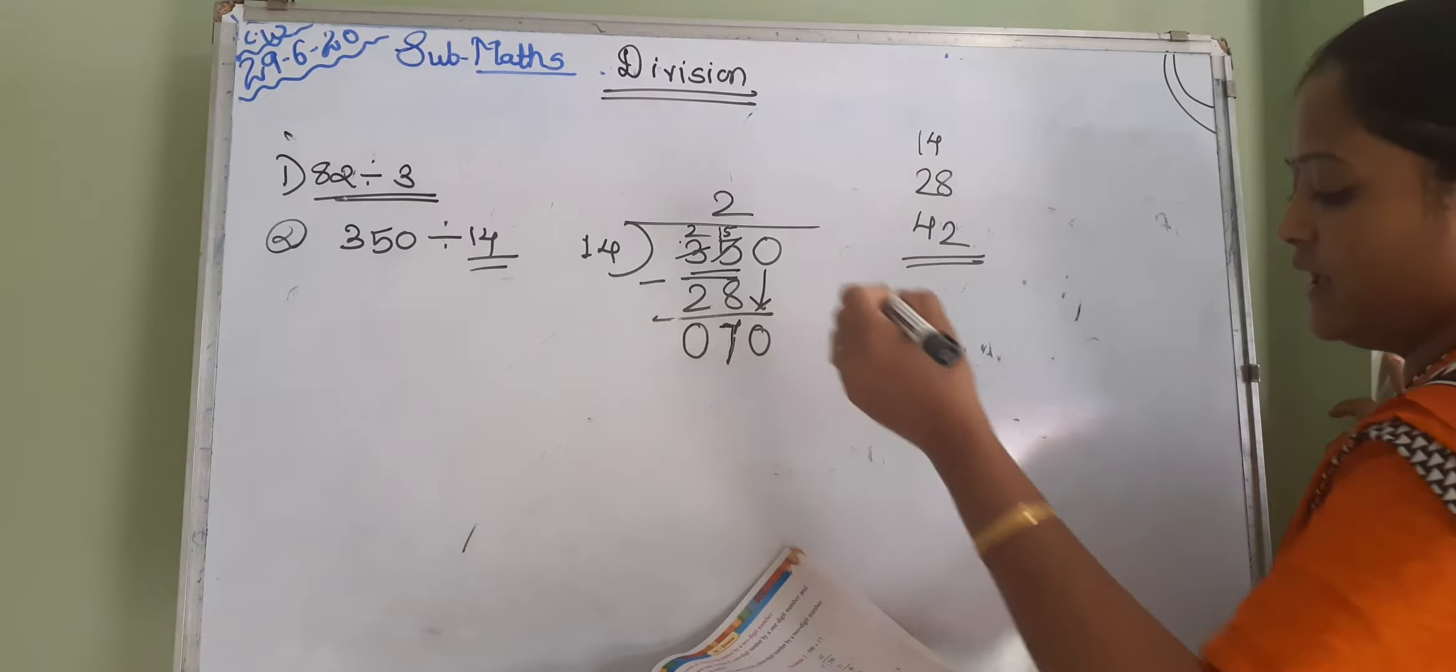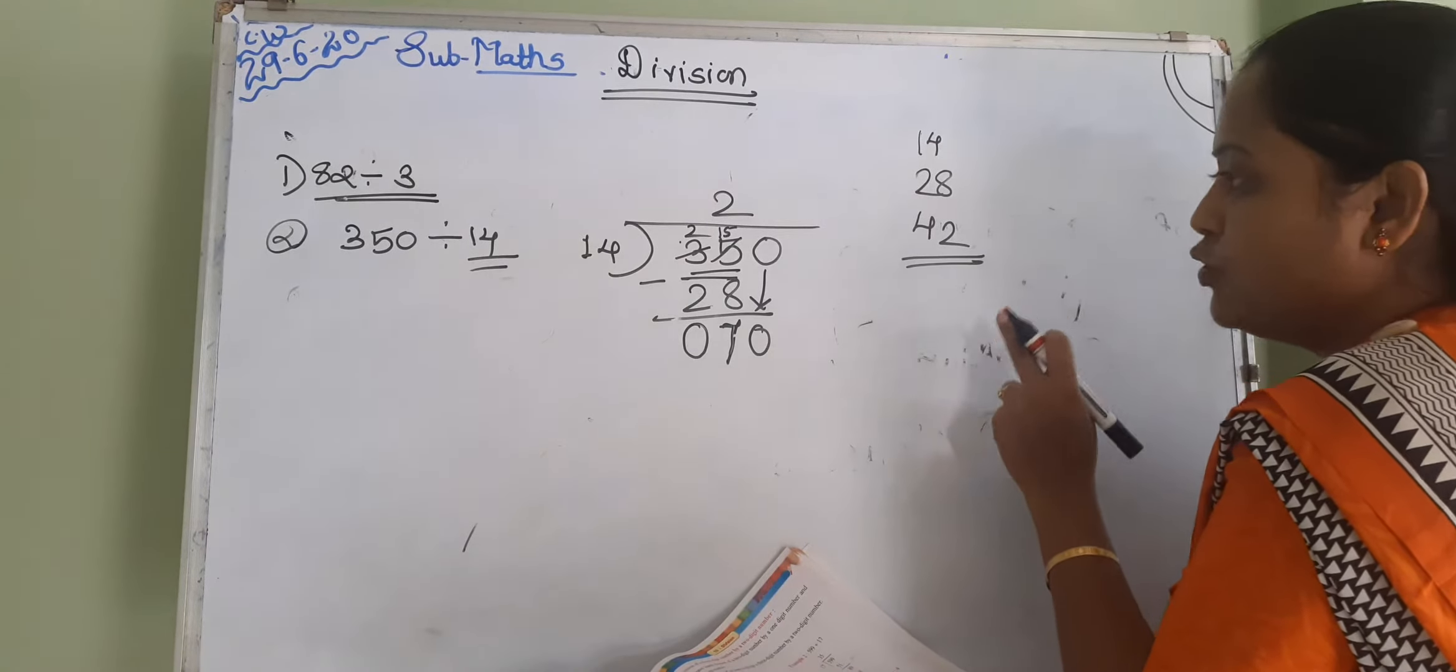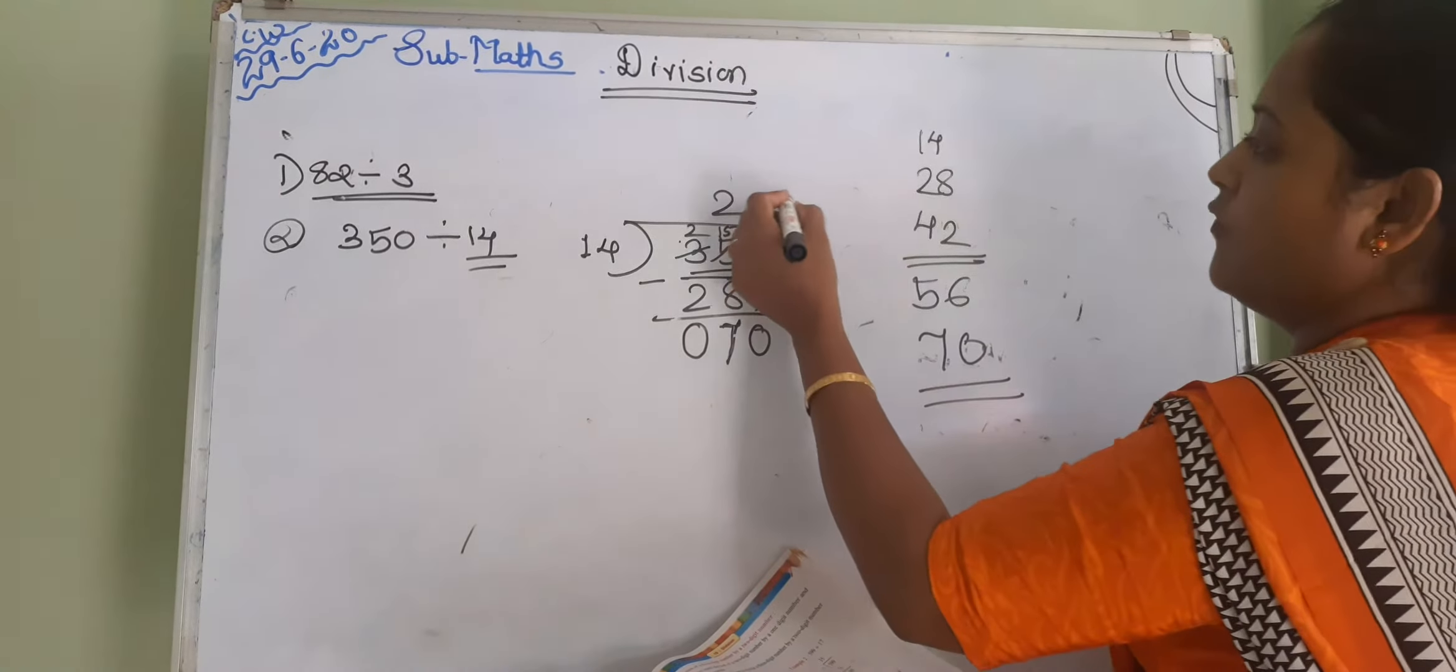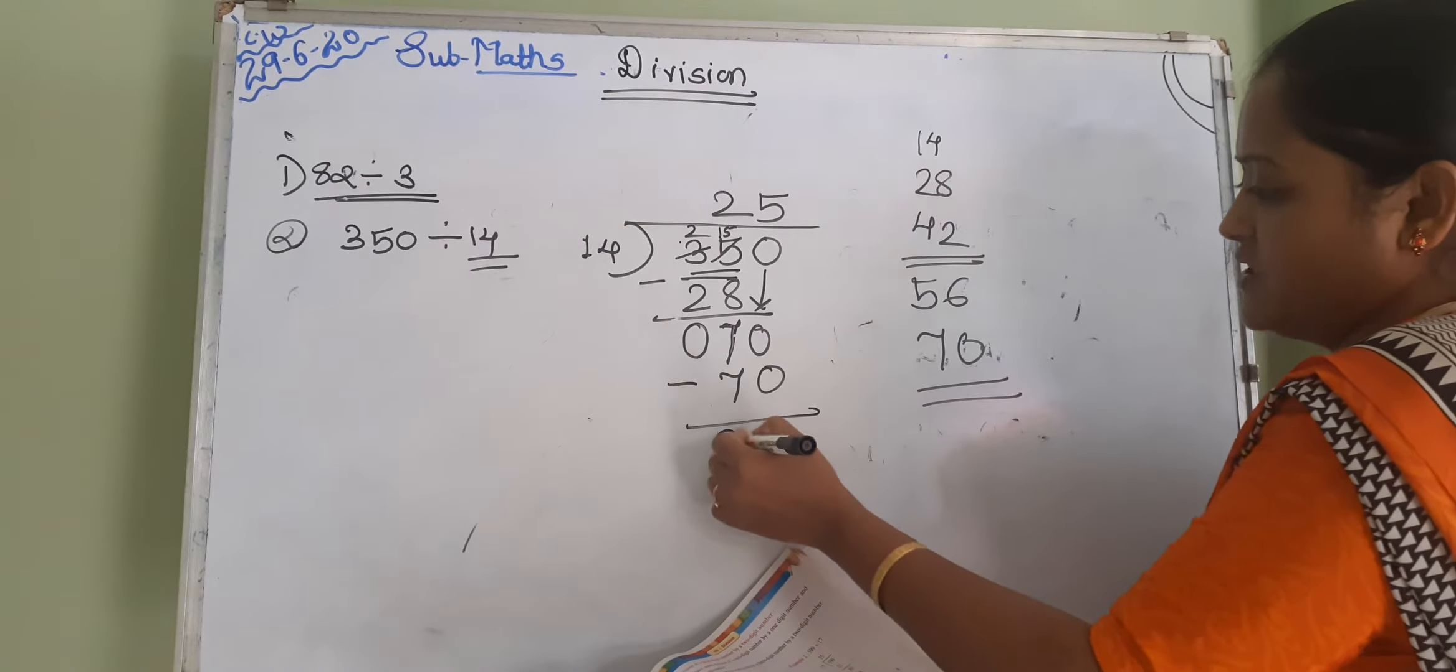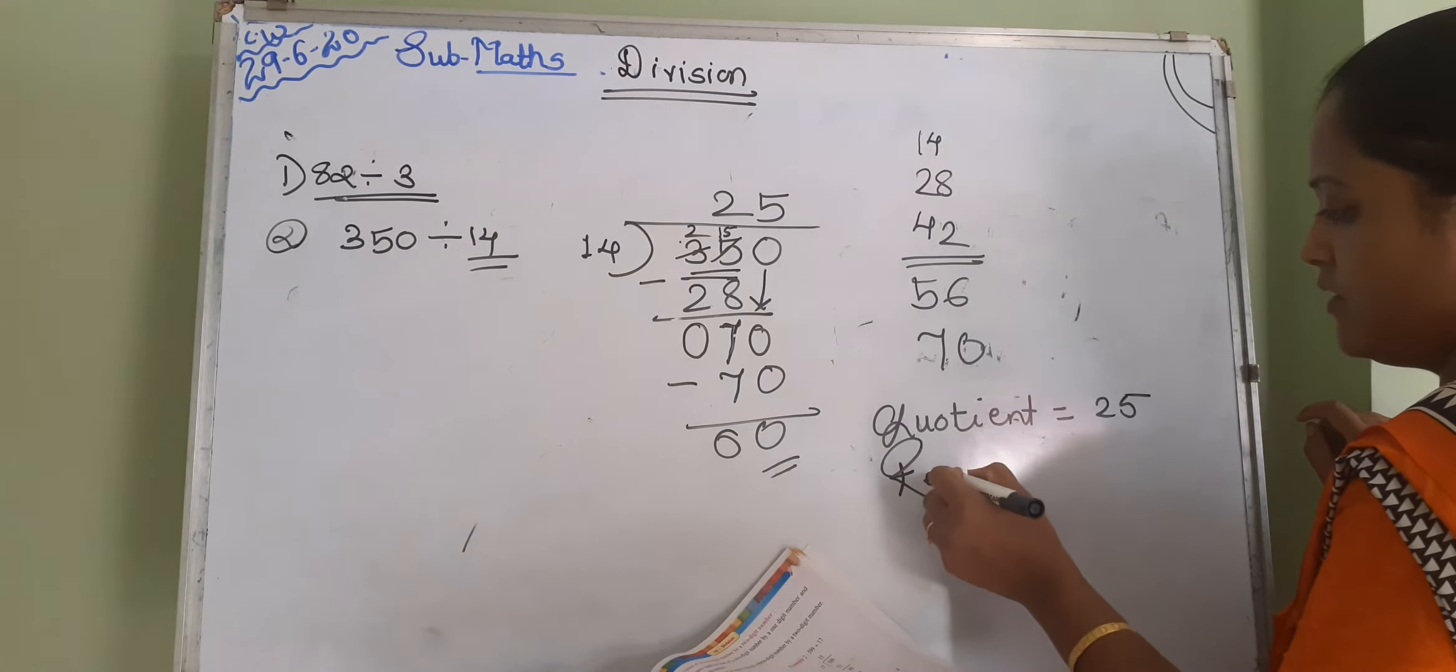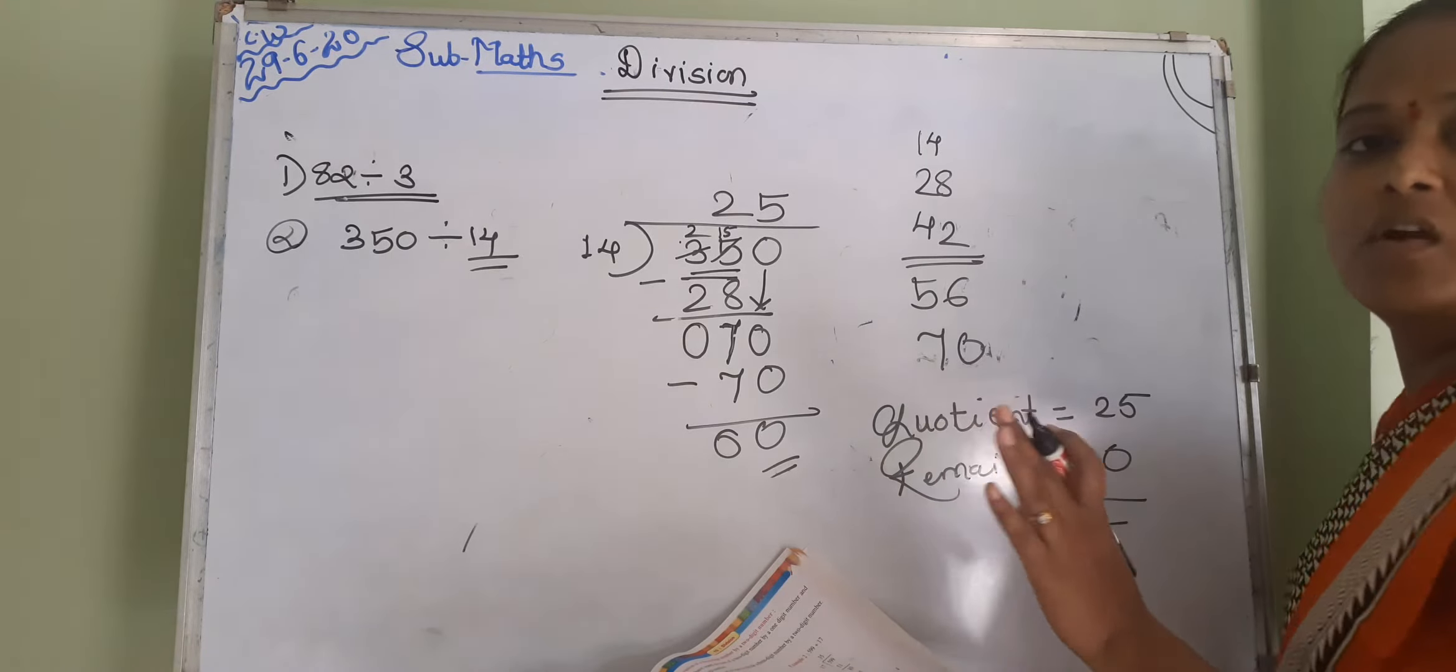अभी check करो. 14 के table में 70 आता है कि. 14 ones जाएगा 14, 14 twos तो हो जाएगा 28, 14 threes तो हो जाएगा 42, 14 fours तो हो 56, and 14 fives जाएगा 70. तो 14 fives जाएगा 70. 70 minus 70, it's 0. So quotient आएगा आपका यहां पे, it's 25 or remainder आएगा आपका 0. Every time you have to write that quotient or remainder of that sum.